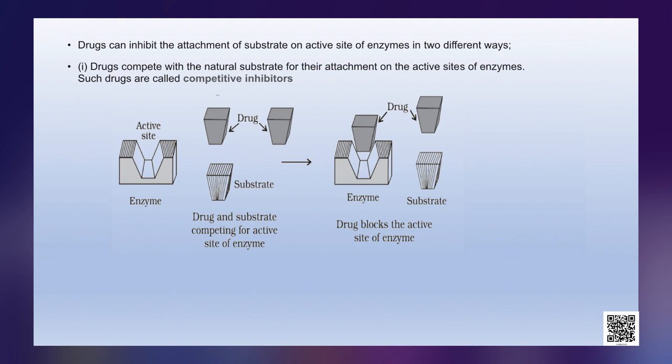Drugs can inhibit the attachment of substrate on the active site of enzymes in two different ways. Some drugs compete with the natural substrate for attachment on the active sites of enzymes — such drugs are called competitive inhibitors. As you can see in the picture, the drug and substrate have a similar structure. In place of the substrate, the drug binds with the enzyme and the active site gets blocked.